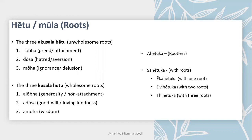The three kusala hetu, wholesome roots, are alobha, adosa, and amoha. Alobha refers to generosity or non-attachment, adosa refers to goodwill or loving kindness, and amoha is wisdom. Based on whether a chitta contains roots or not, it is divided into two groups. If the consciousness is rootless it is called ahetuka — the prefix 'a' indicating absence. If the consciousness has roots, it is called sahetuka — the prefix 'sa' indicating presence.